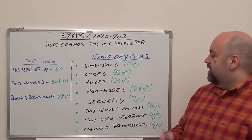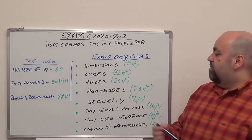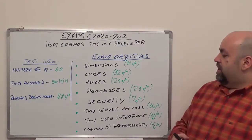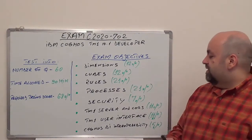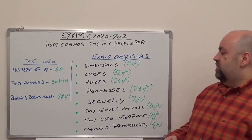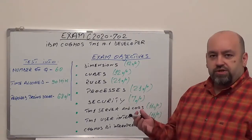Next one is Security with 7% from total questions. Next one is TM1 Server and Labs, 11% from total questions. Next one is TMI User Interface with 11% from total questions. And of course the last one is going to be Cognos BI Interoperability with 5% from total questions.